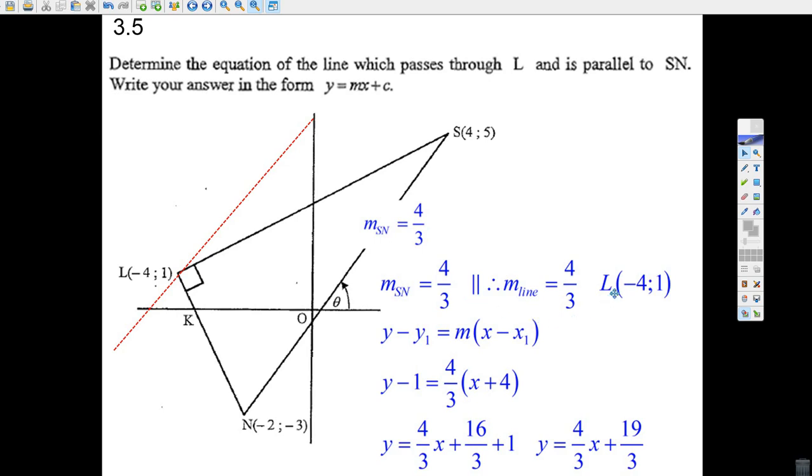And it must pass through this point, minus 4 and 1. So all we do is we use the gradient point formula. We put in our point, here we put minus 1, we put 1 there, so it's y minus 1. We put the gradient in there for m, we put minus 4 in, this minus minus 4 makes it plus 4.